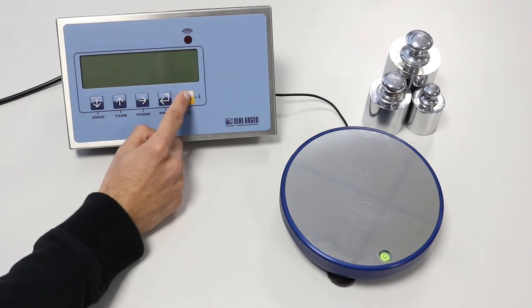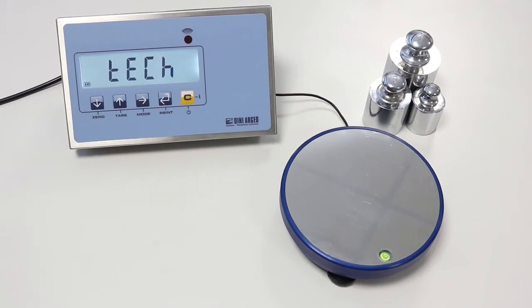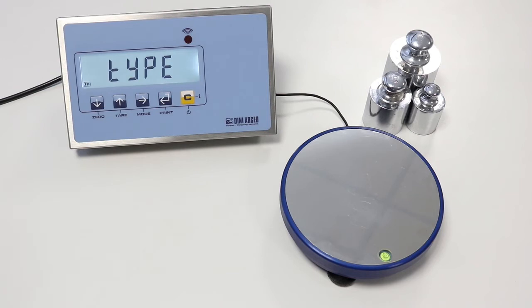Once turned on, this scale shows the technical message NO CAL, which means no calibration stored. To enter the programming menu, press the TER key. Inside the menu, use the 0 key and the TER key to scroll up and down the parameters. Scroll down until SETUP and press PRINT.